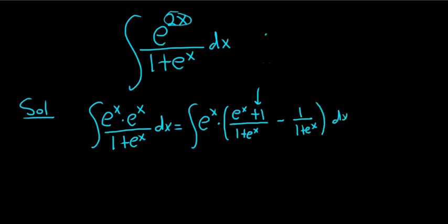Because if you want to show an extra step, you can think of it like this: e to the x plus 1 minus 1 over 1 plus e to the x. And then you break it up and you get this.